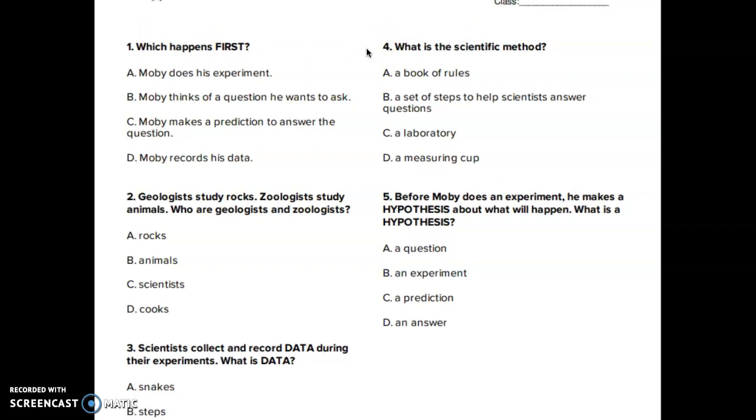What is the scientific method? A. A book of rules. B. A set of steps to help scientists answer questions. C. A laboratory. D. A measuring cup.